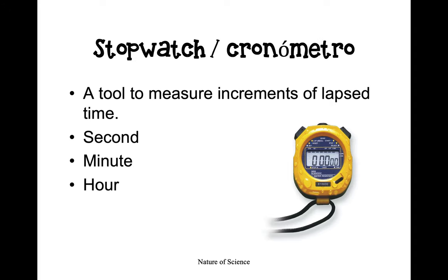Next, we'll discuss tools that are used to measure time. Time can be measured using a stopwatch, like the one you see in the picture. A stopwatch is a tool used to measure small increments of elapsed time. For example, if I would like to see how long it takes to heat up a bag of popcorn, I could use a stopwatch. We measure time using a stopwatch in seconds, minutes, or even hours.